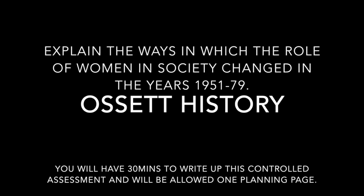There are five things listed on the page: work, the home, money, education and politics. You could choose to write about some of these in your historical explanation, but there are other things to consider too. And so, to the story of women in Britain from 1951 to 1979 — sit back and strap yourself in.